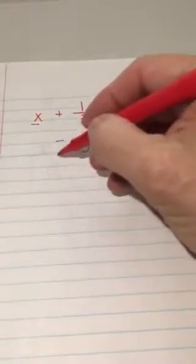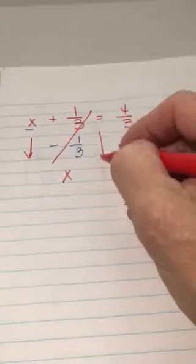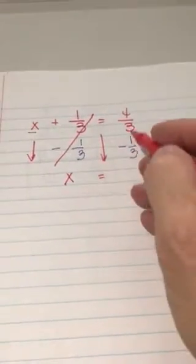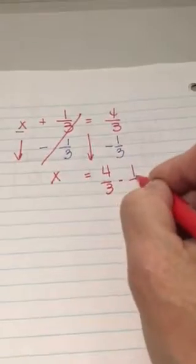Now, one-third minus one-third cancels out, and we bring our variable down. We have x. We bring our equal side down. We now have four-thirds minus one-third.